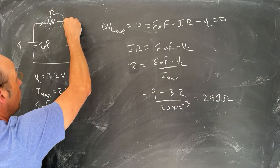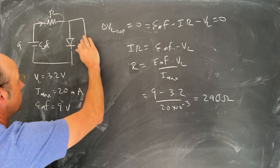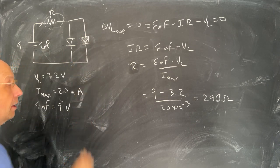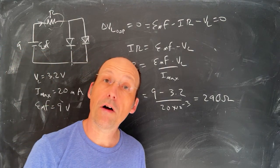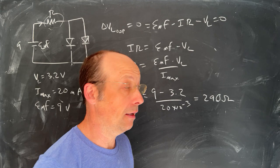Imagine that I have two blue LEDs in parallel, like that. Then what resistor would I need? Would I need a greater resistor? Would I need a smaller resistor? What would I need?